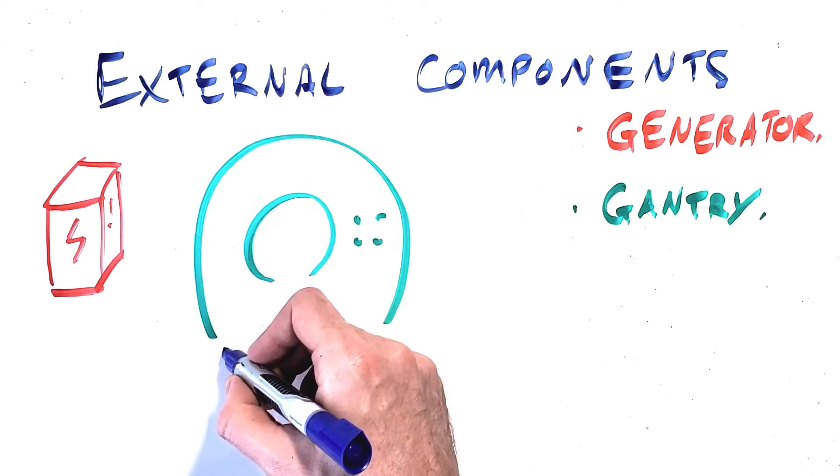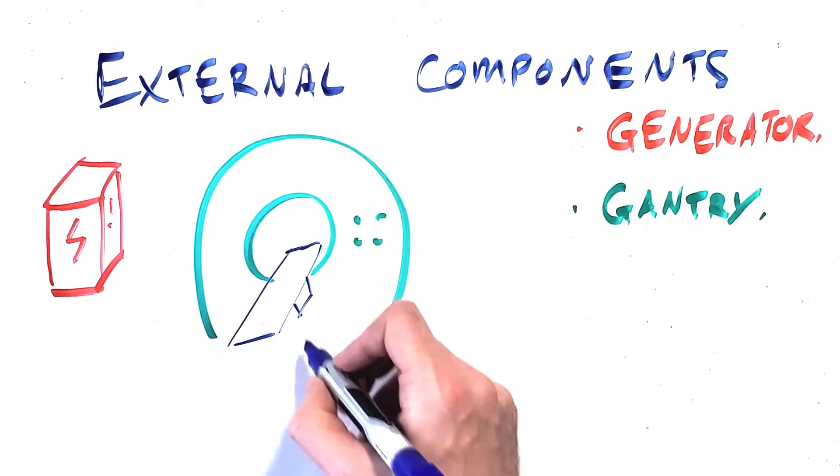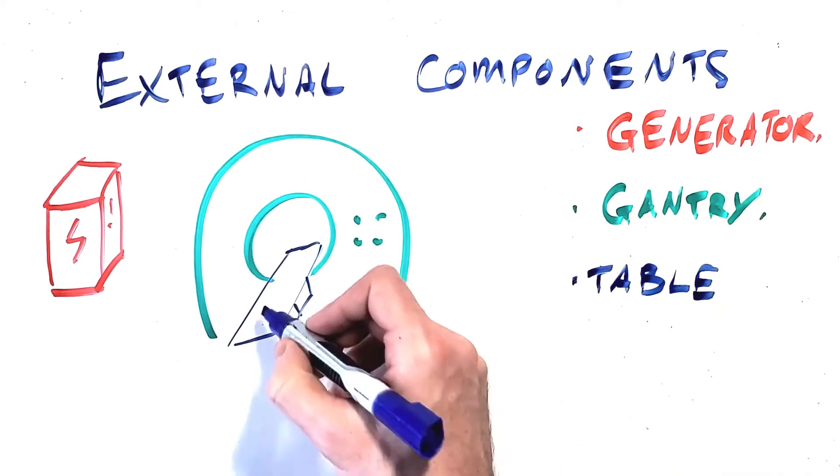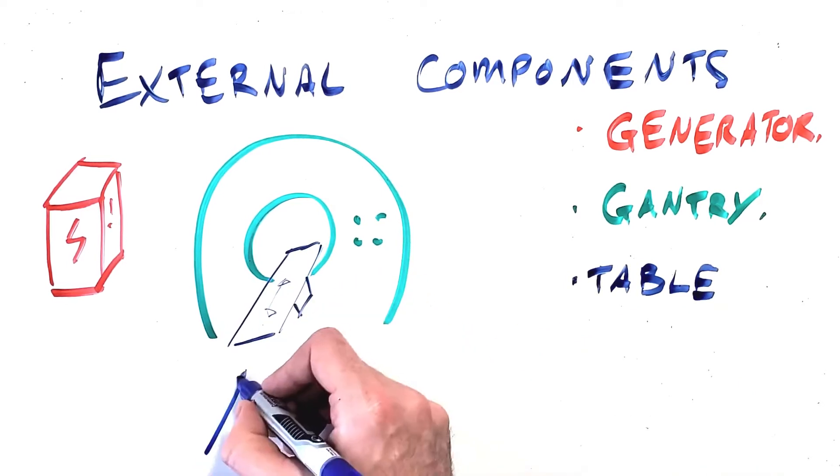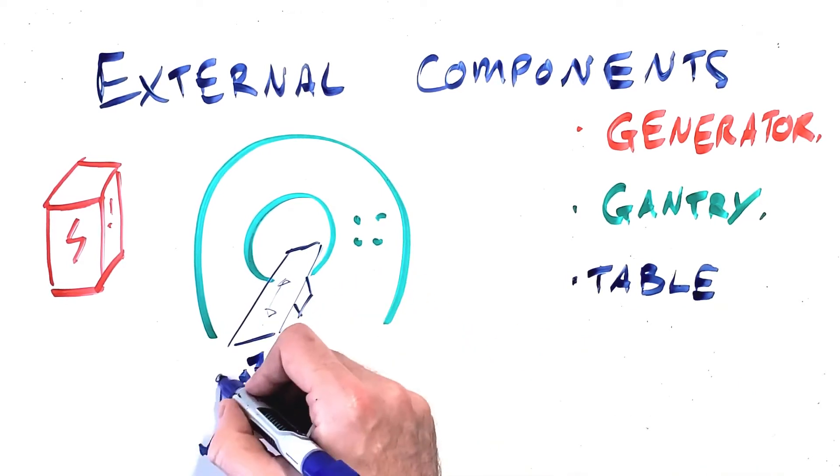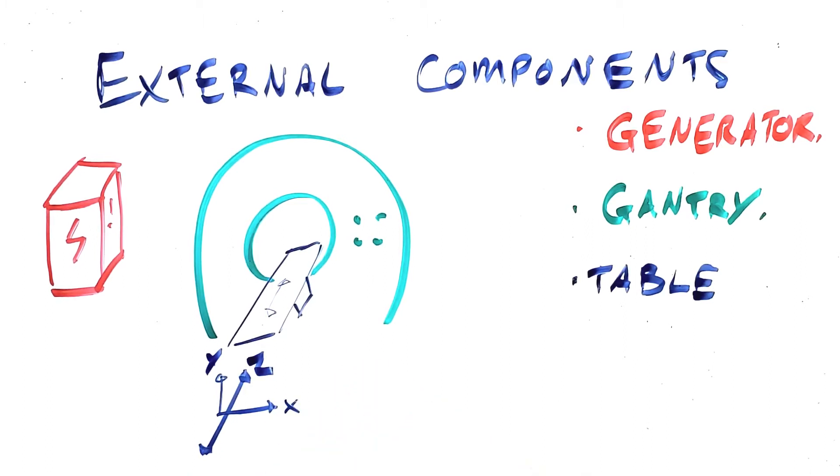The table or couch which the patient is positioned upon and which slides in and out of the scanner along the z-axis, so the x-axis being left to right, the y-axis being up and down, and the z-axis being in and out of the scanner.